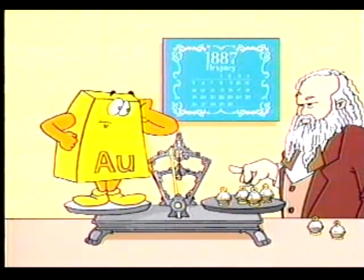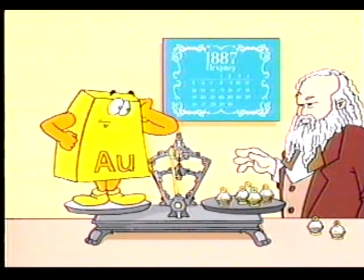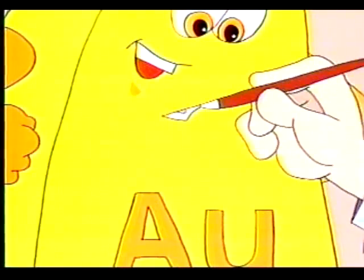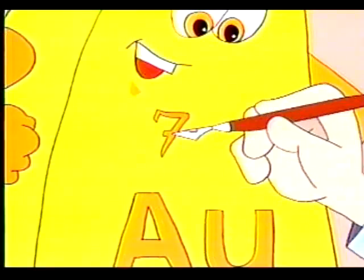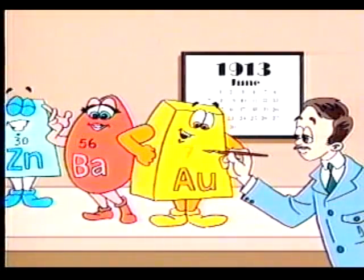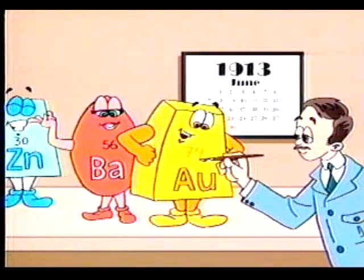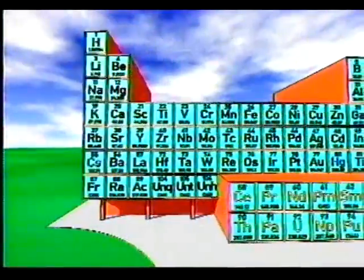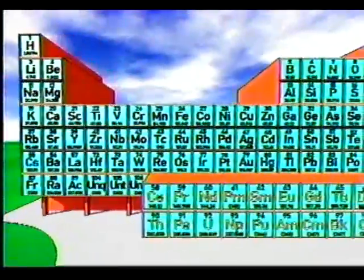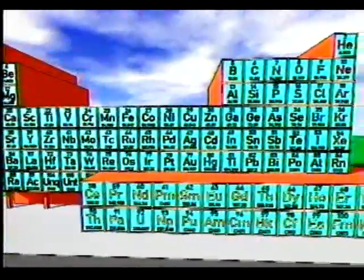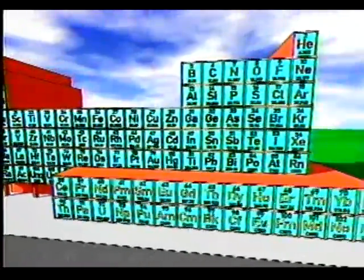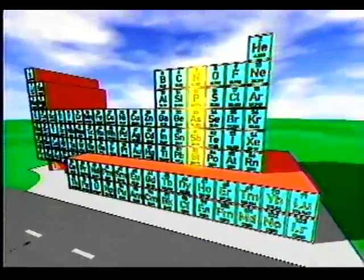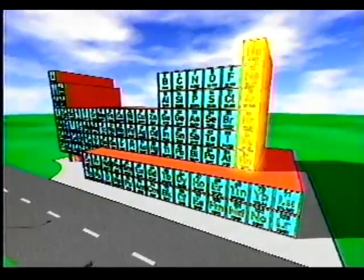Su único error consistió en que los clasificó de acuerdo a su masa atómica en lugar del número atómico, porque este fue descubierto hasta 1913. En la actualidad, la tabla periódica está organizada en 18 columnas llamadas grupos o familias, cada una con su número, aunque todavía hay algunas con la clasificación antigua que incluía letra y número.